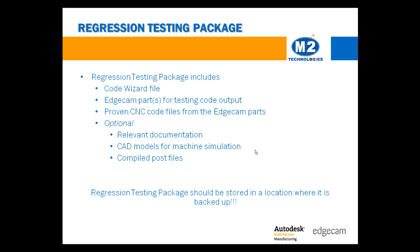Here's what we suggest that you should put into yours. You should have the CodeWizard file, and you should have one or more Edgecam parts which provide reasonable testing of the output from the different Edgecam cycles that you use, and the proven CNC code from each of those Edgecam parts. You may also want to add other useful information, such as models used for machine simulation, a list of G and M codes, and so on.